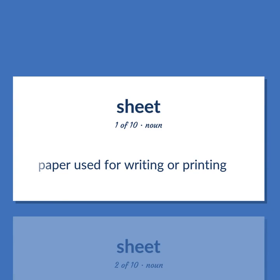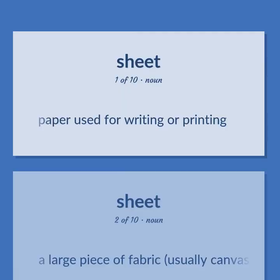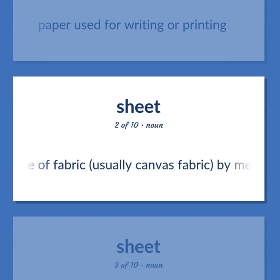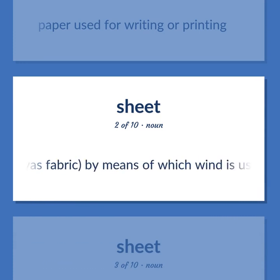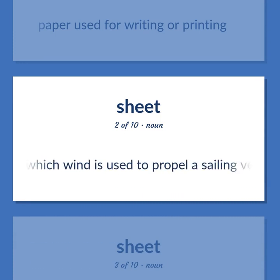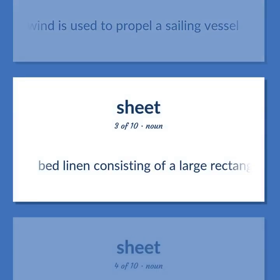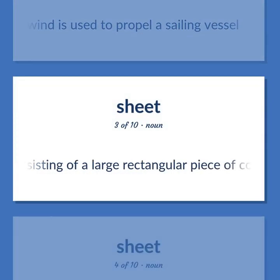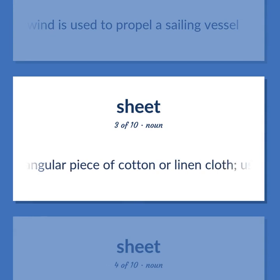Sheet. Paper used for writing or printing. A large piece of fabric, usually canvas fabric, by means of which wind is used to propel a sailing vessel. Bed linen consisting of a large rectangular piece of cotton or linen cloth, used in pairs.